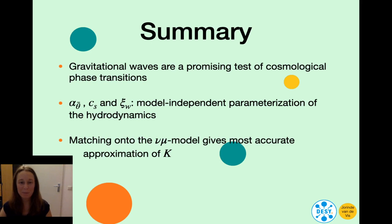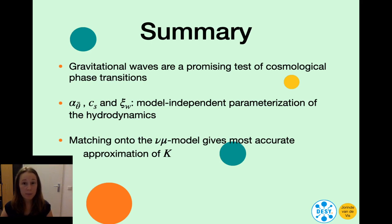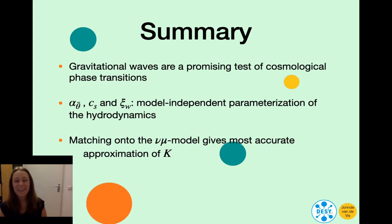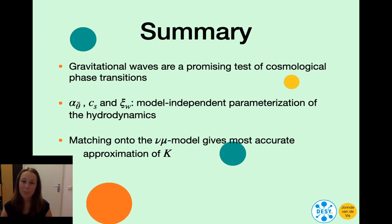So that brings me to my summary. Gravitational waves are a promising tool to test physics beyond the standard model in the presence of a first-order phase transition. One can describe the hydrodynamics in an almost model-independent way in terms of our new phase transition strength, the sound speed, and the bubble wall velocity. By matching a model of new physics onto the new mu model, one can accurately determine the kinetic energy fraction with the help of our code snippet provided in our paper. Thank you very much.